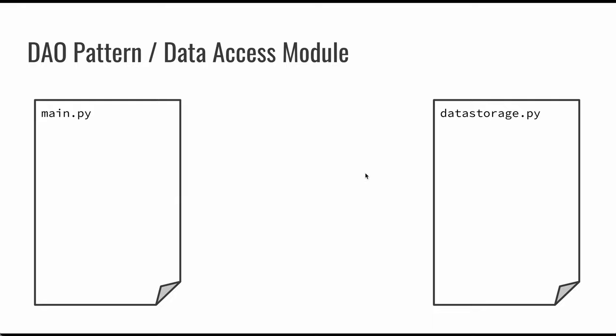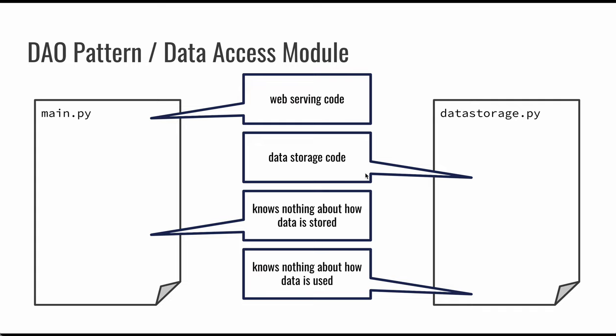The simplest way to look at this is: in our application so far, we've had a main.py file that's had a lot of our content, and we might also have a data_storage.py file. The main.py is going to have the code that serves our pages — the web serving code. And we could think about our data storage code in data_storage.py. So in main.py, if it's calling to this data storage file for storing data, it doesn't have to really understand how that data is stored. And the data storage file doesn't actually have to have any idea how that data is used. By separating these two things, now we have a data storage file with a pretty specific purpose and a main.py with a much more specific purpose.